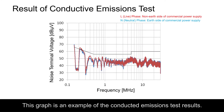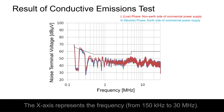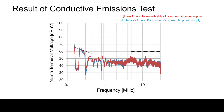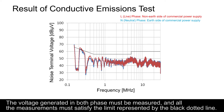This graph is an example of the conductive emissions test results. The X-axis represents the frequency from 150 kHz to 30 MHz. The Y-axis shows the level of the noise terminal voltage. The voltage generated in both phases must be measured, and all measurements must satisfy the limit represented by the black dotted line.